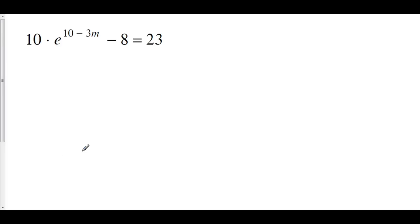Finally, 10 times e to the 10 minus 3m minus 8 equals 23. Let's solve for m. First, we'll add 8 to both sides. So we have 10 times e to the 10 minus 3m is equal to 31. Divide both sides by 10. So we have e to the 10 minus 3m is equal to 3.1.